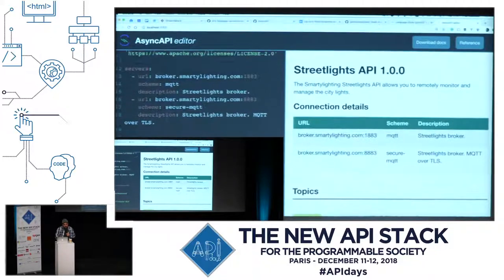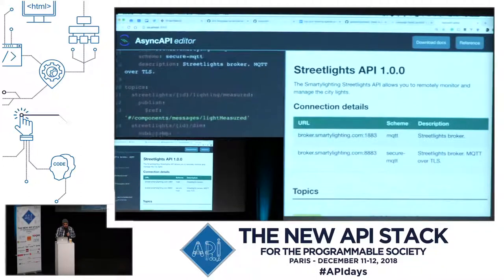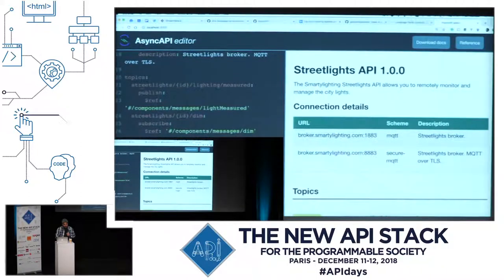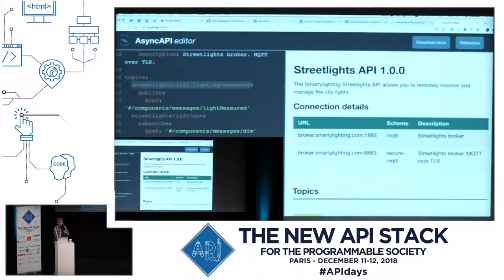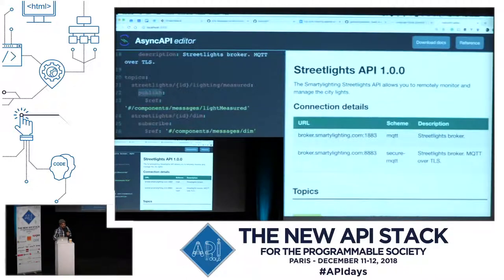So I implemented a very simple AsyncAPI document. The topics, as I was saying, are the channels — you can call them channels. We have something like "streetlights/{id}/lighting/measured." This is pretty much, if you're familiar with OpenAPI, like the path — the path where you send a request. And we're saying here that as a client, as a consumer of this API, we can publish information, and this information is going to be about light that has been measured.